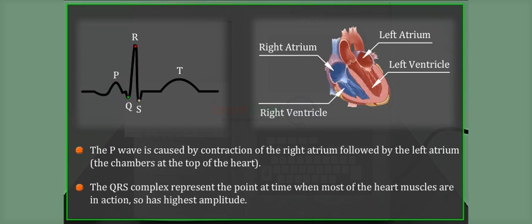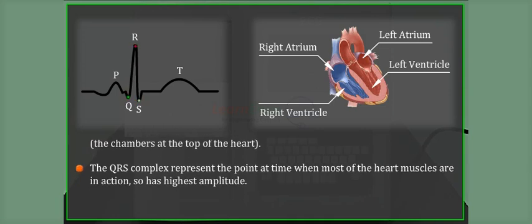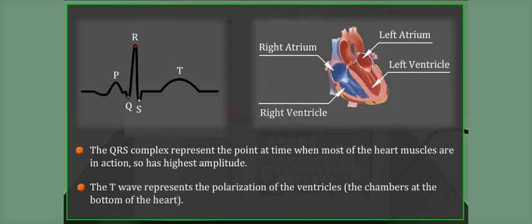The QRS complex represents the point in time when most of the heart muscles are in action, so has highest amplitude. The T wave represents the polarization of the ventricles, that is the chamber at the bottom of the heart.